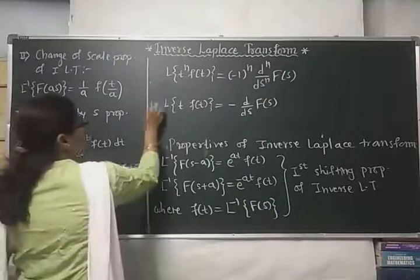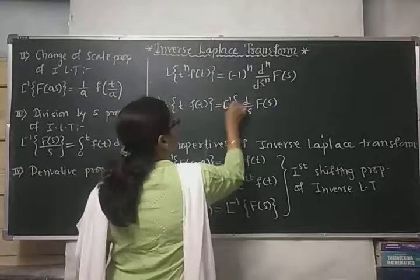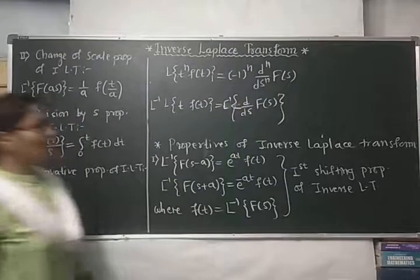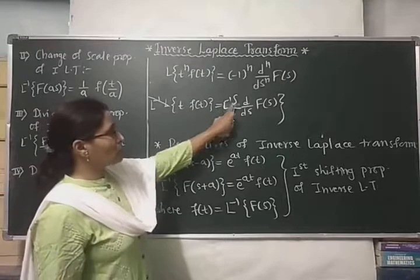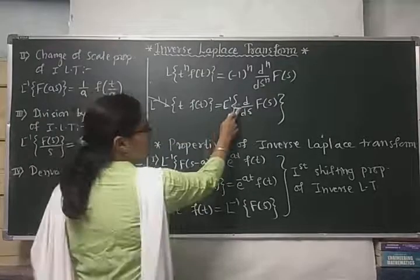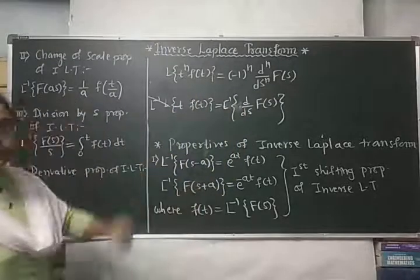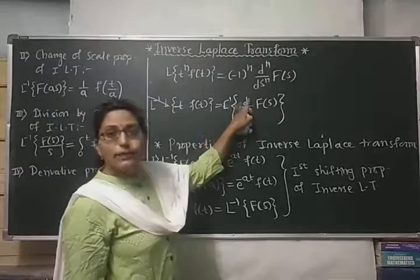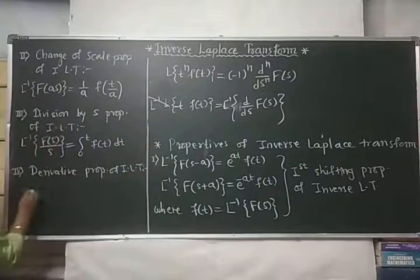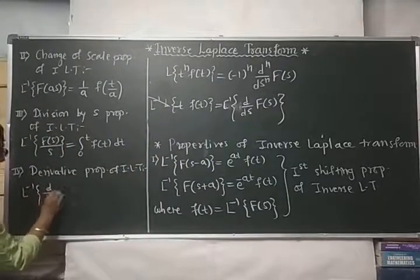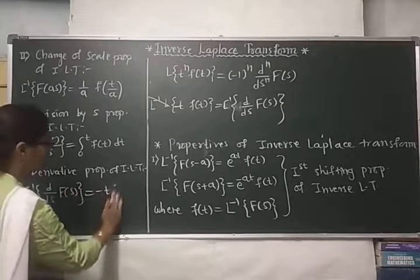After applying L inverse and shifting the negative sign, we get: the Laplace inverse of d/ds{F(s)} equals −t·f(t). Remember this property: the Laplace inverse of the derivative of F(s) is −t·f(t), where f(t) is the Laplace inverse of F(s).